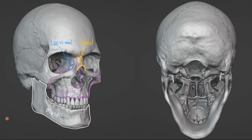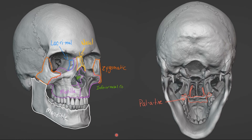The jawbone is the mandible. The cheekbones are the zygomatic bones. The posterior one third of the roof of your mouth — you have the palatine bones. Then these little shelves here — that little shelf kind of coming out of the side of your nose is the inferior nasal concha. And then this sort of medial septum of your nose, that you're also seeing in the back, that is the vomer. In the front here, in front of the palatine bone, that's still just the maxilla.